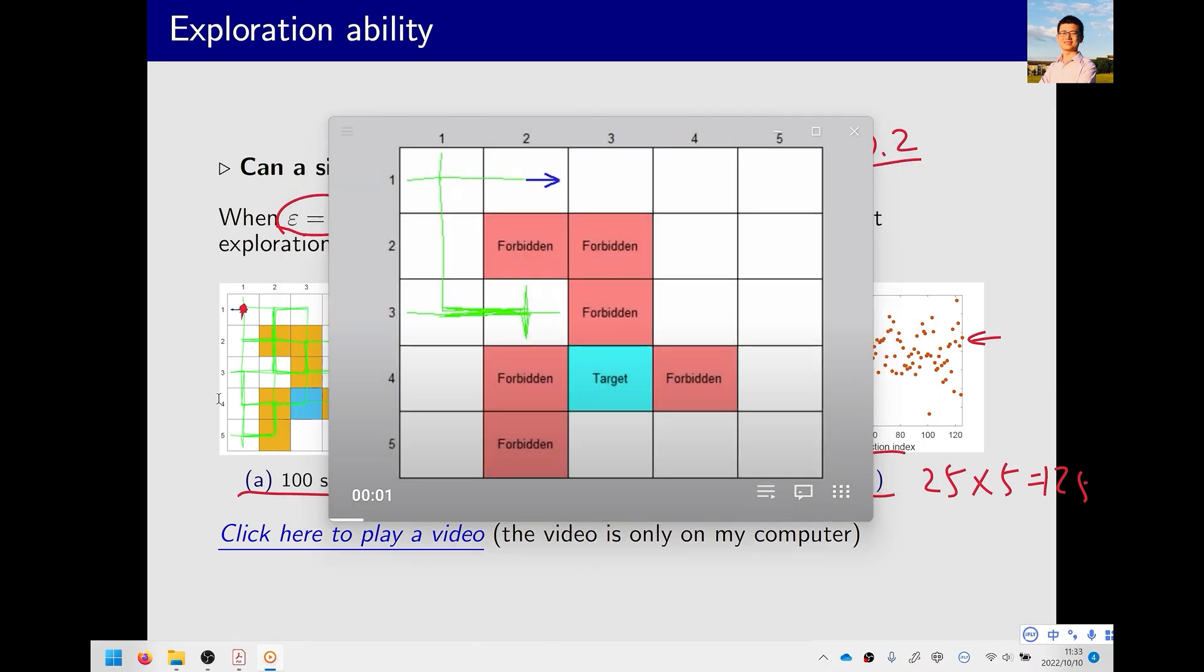This video demonstrates such a policy where an agent continuously explores within this environment according to the policy. The blue arrow represents the agent's current state and the action it has taken. Initially, it starts from this state and now finds itself trapped in this area. Since the surroundings are difficult to escape, yet it persists in exploration. Let us see if it can move out of this area. Now it has left this area, and due to a certain probability of choosing other places, it has moved to this new area.